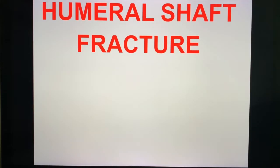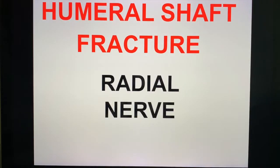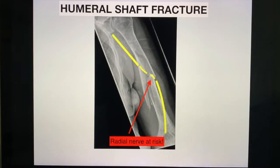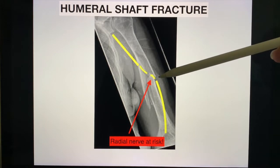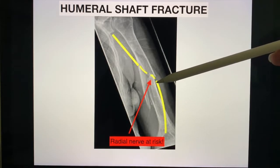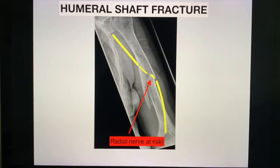A wrist drop or radial nerve injury occurs when there is a fracture of the humeral shaft — specifically the shaft of the humerus, not the surgical neck. If you have a mid-shaft or humeral shaft fracture, it is the radial nerve that will most likely be injured, and your patient will clinically manifest with the wrist drop.